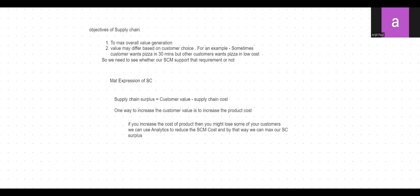One way to increase customer value is to increase the product cost. However, the repercussion is that increasing product cost will cause you to lose cost-sensitive customers. Another way to increase supply chain surplus is to reduce supply chain cost — if you reduce supply chain cost, your supply chain profit or surplus will increase.